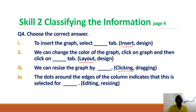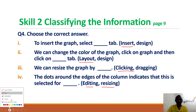The next question is: the dots around the edges of the column indicate that the graph is selected for editing, resizing, or something else? When we click on the dots, we can resize the graph. So the correct answer is resizing. With that, we have completed today's lecture.